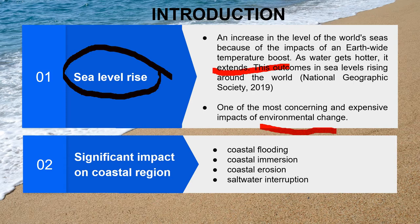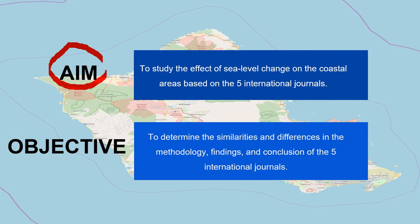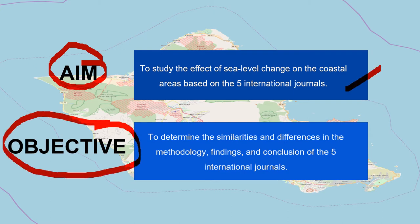The significant impact on the coastal region will be flooding, erosion, and saltwater interaction. Based on the references we found, the long-term impact of sea level rise on the coastal region is the increase in the vulnerability of the coastal region to floods and storms. Our purpose of this project is to study the effect of sea level rise on the coastal area based on the five international journals. Our objective is to determine the similarities and differences in the methodology, findings, and conclusions of the five international journals.